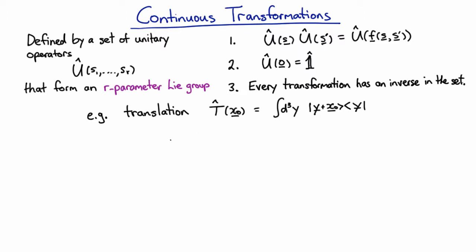We showed that was translation but never actually showed that it was unitary. To show this is unitary, we need to show that T of x naught times its Hermitian conjugate is the identity.